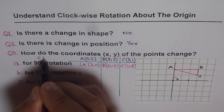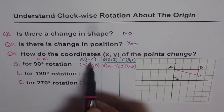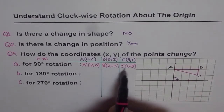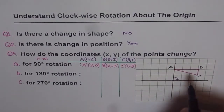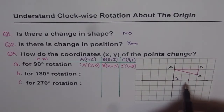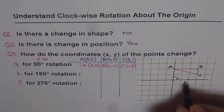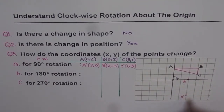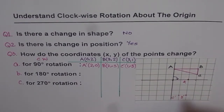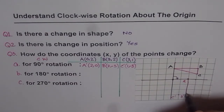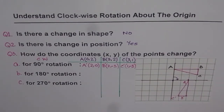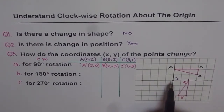So for a 90 degrees clockwise rotation, we swap the coordinates — x becomes y and y becomes x — and then change the sign for y. Let me draw the new triangle with these coordinates. A' is (2, 0), B' is (2, −3), and C' is (1, −3). The triangle after 90 degrees clockwise rotation looks like this. Every point has been rotated clockwise by 90 degrees about the origin.